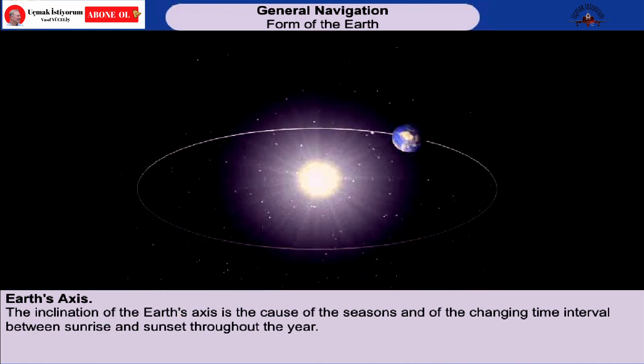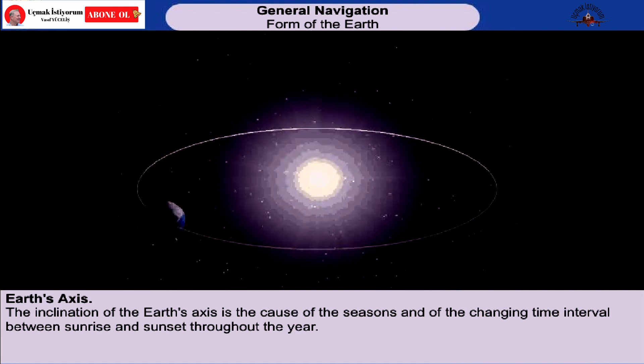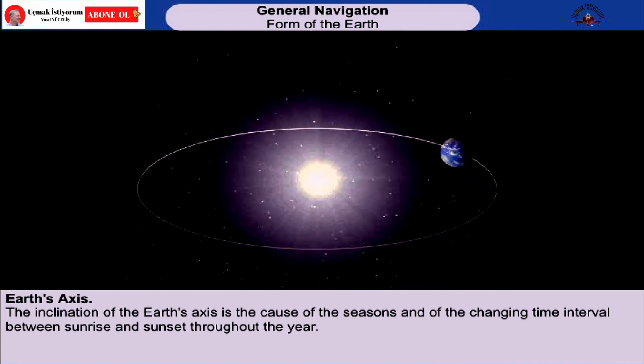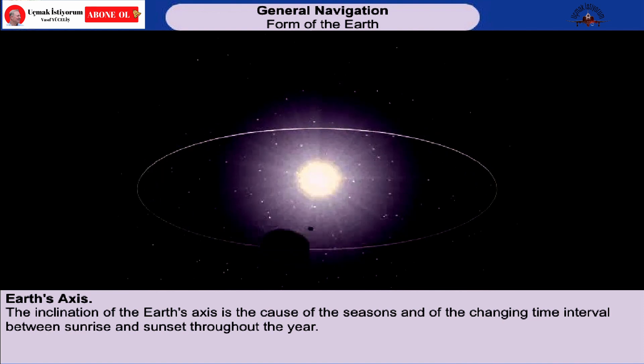The inclination of the Earth's axis is the cause of the seasons, and of the changing time interval between sunrise and sunset throughout the year.